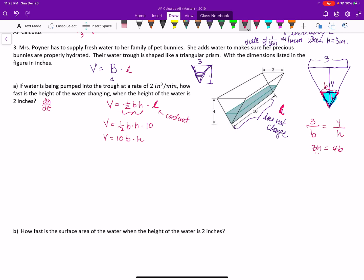I could possibly rewrite this volume formula all in terms of H, then it would make my life a lot easier. I could rewrite the base as 3H over 4, which I can substitute in. So I get the volume is equal to 10 times 3H over 4 times H, which gives me that's going to be 15 halves H squared.